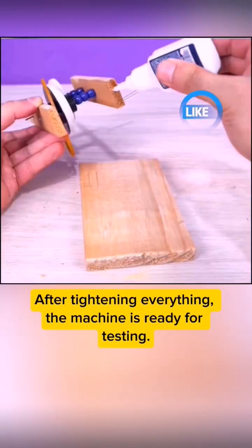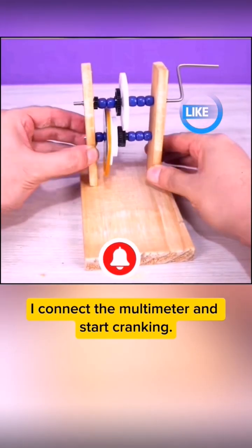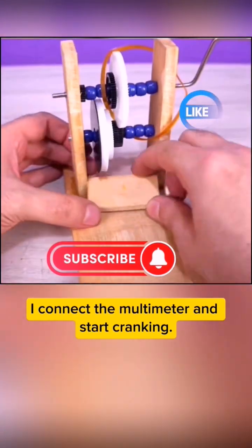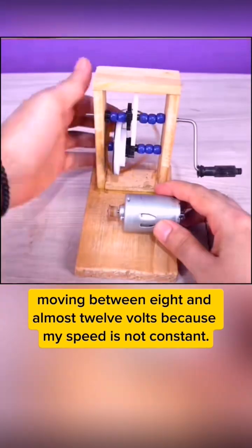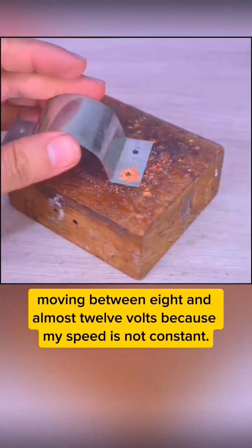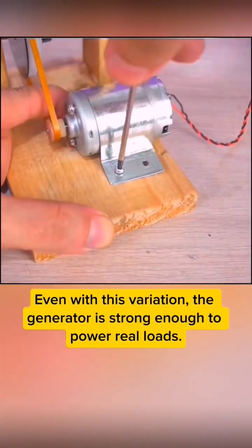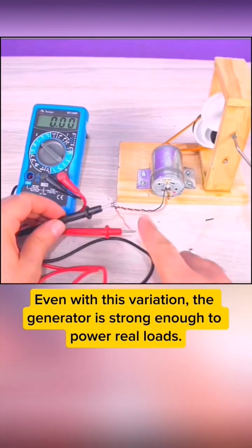After tightening everything, the machine is ready for testing. I connect the multimeter and start cranking. The voltage instantly rises, moving between 8 and almost 12 volts because my speed is not constant. Even with this variation, the generator is strong enough to power real loads.